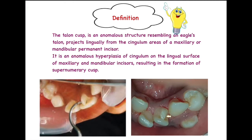At the bottom of the slide I have put up two clinical pictures of Talon's Cusp. In the first picture, the clinician is holding the Talon's Cusp with an explorer — we can clearly see a structure resembling an eagle's talon projecting from the cingulum area of the maxillary incisor. In the second picture, there is a projection coming off the cingulum area merging towards the incisal edge, which is an example of Talon's Cusp in the mandibular arch.